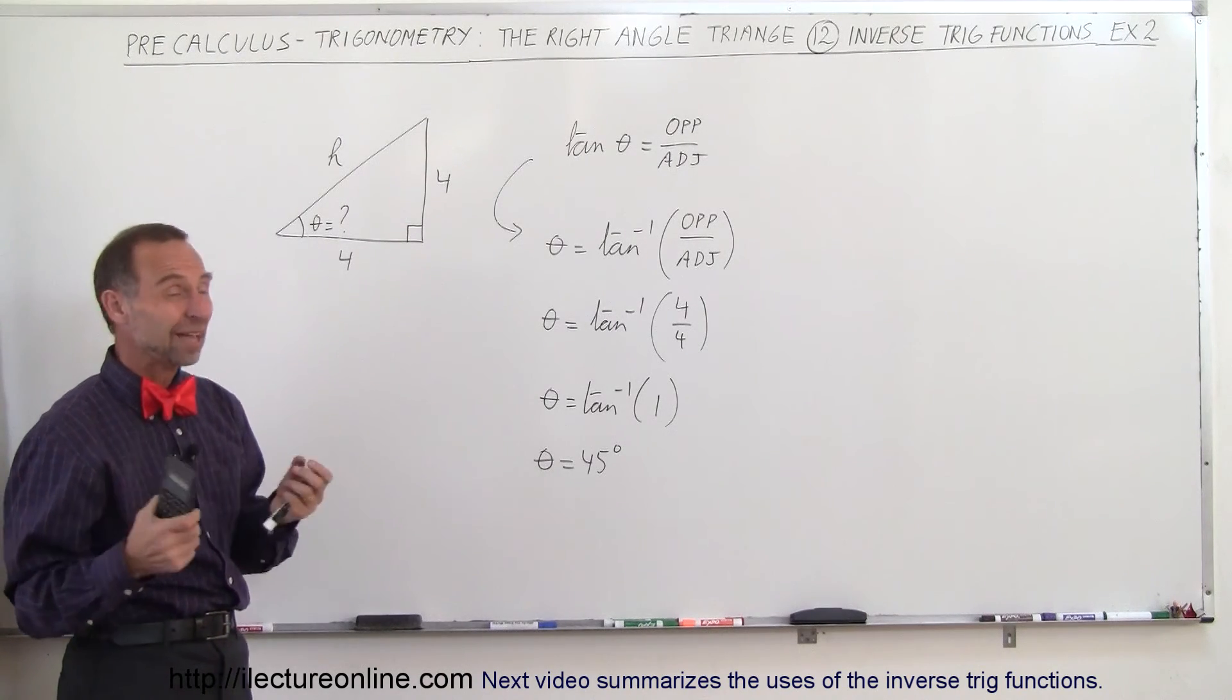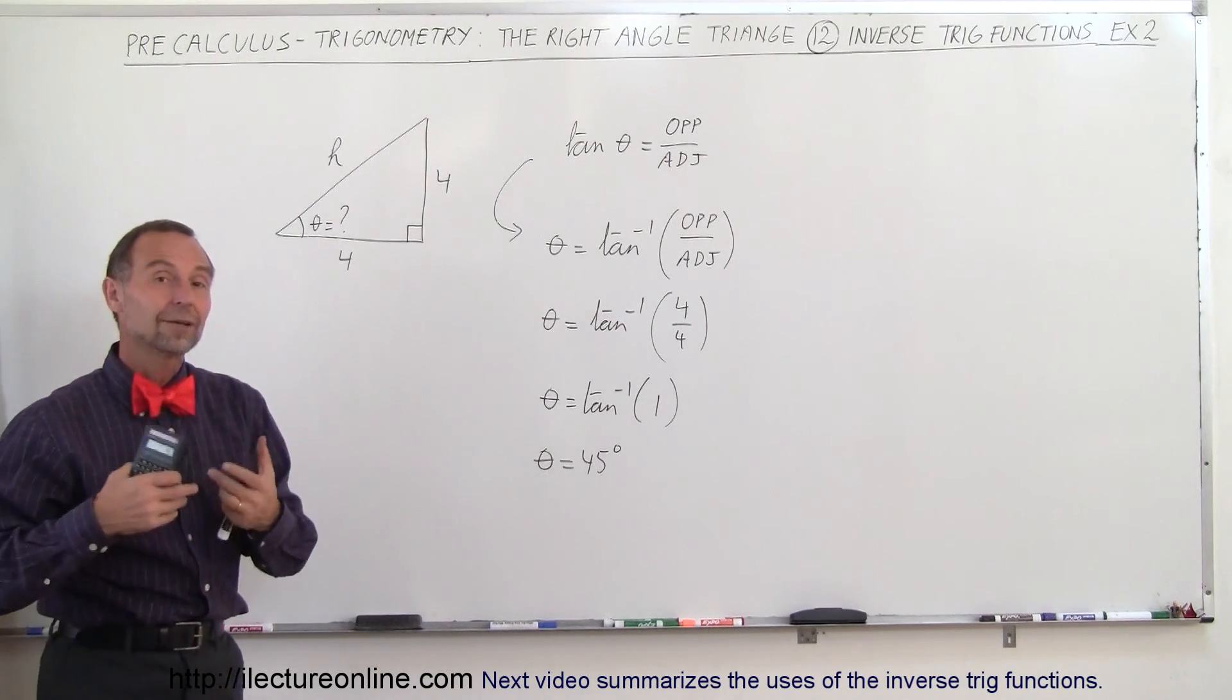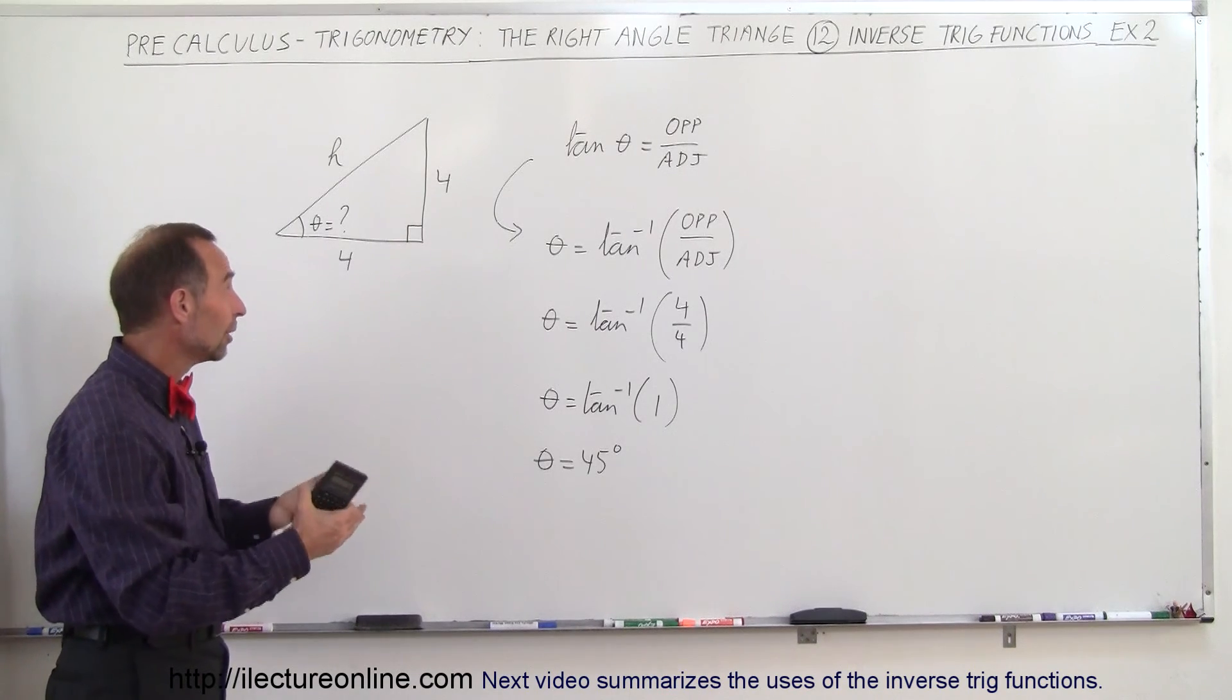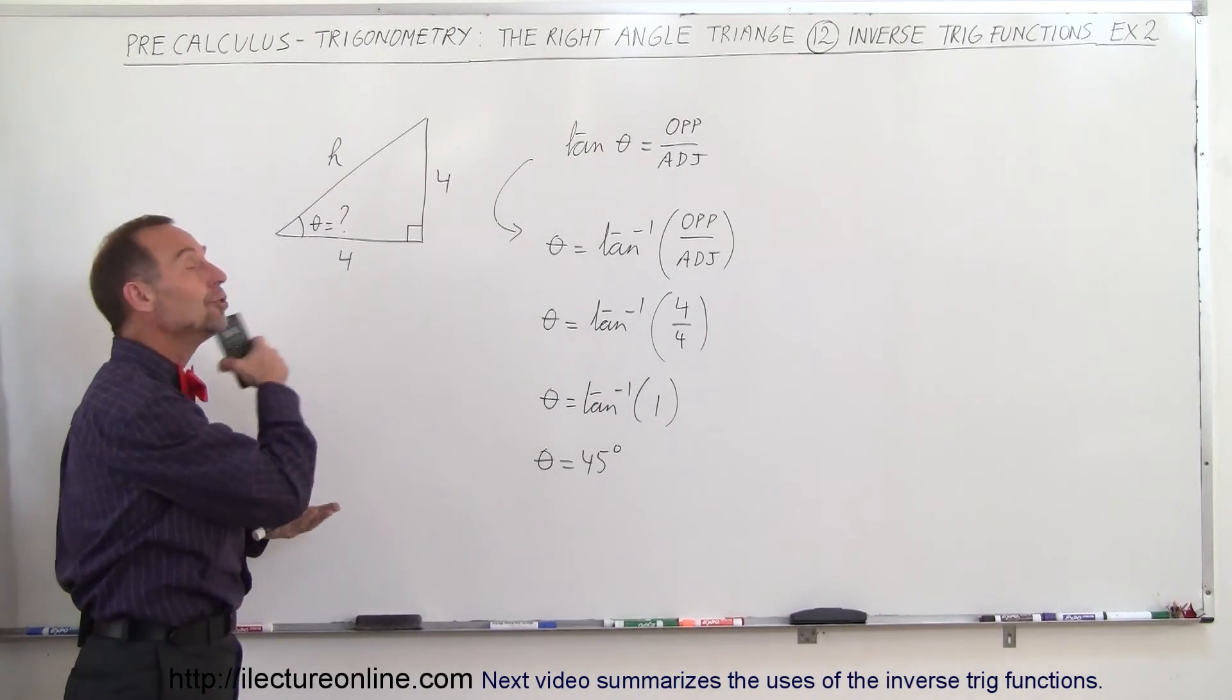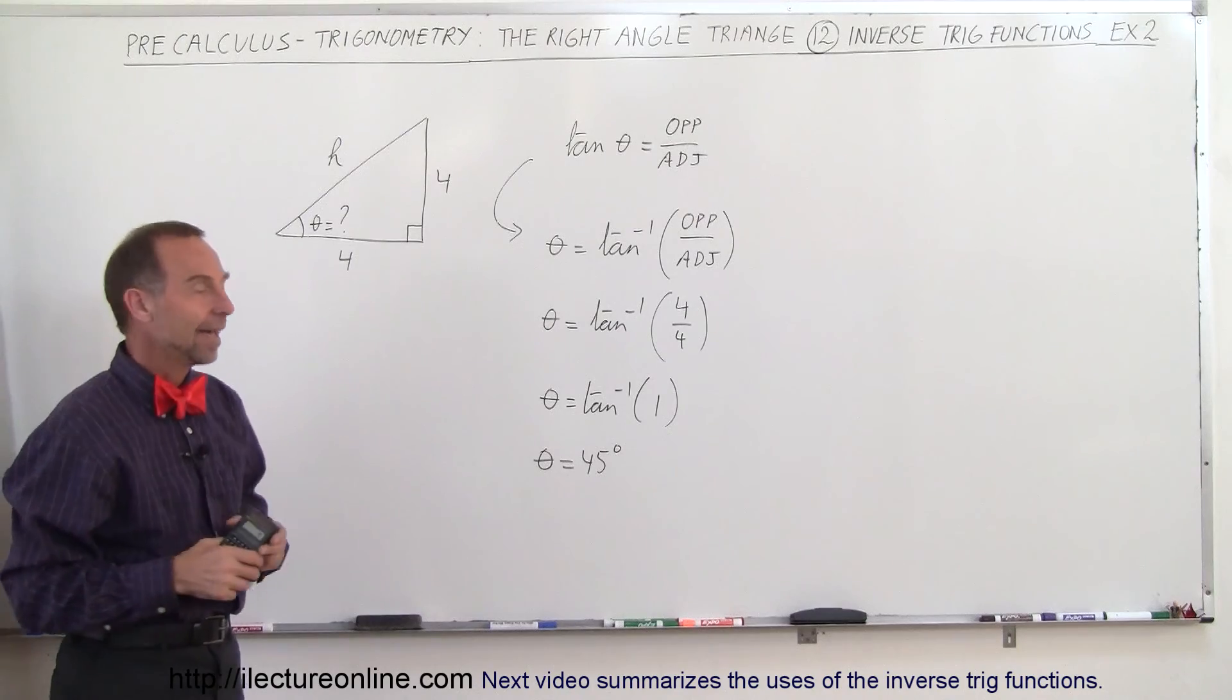And that's how you do that. So the inverse tangent function, or the inverse trigonometric functions in general, are very handy to find the unknown angle in the right angle triangle, and that's how we do that.